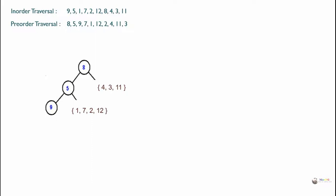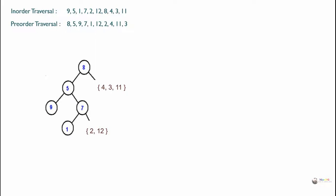Now look at elements 1, 7, 2, 12. In the pre-order traversal, the element coming first from the beginning is 7. So the root will become 7. Locate 7 in in-order traversal — 1 is coming on the left and 2 and 12 are coming on the right. So we rewrite the subtree with 7 as the root, 1 on the left, and 2 and 12 on the right side.